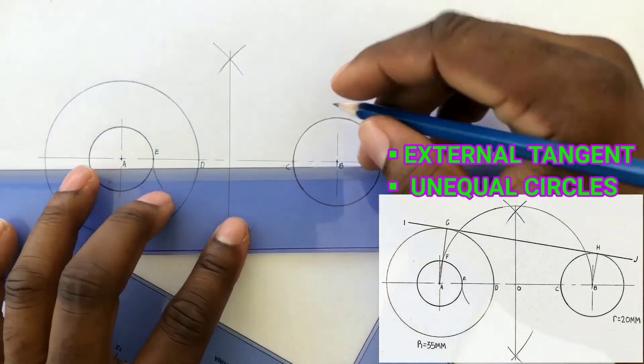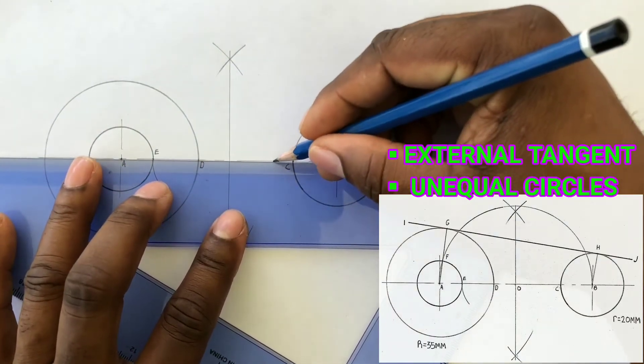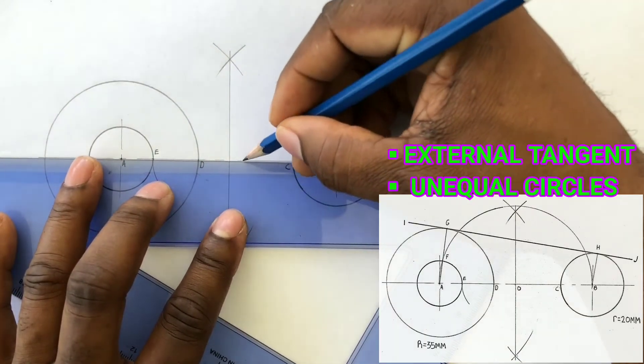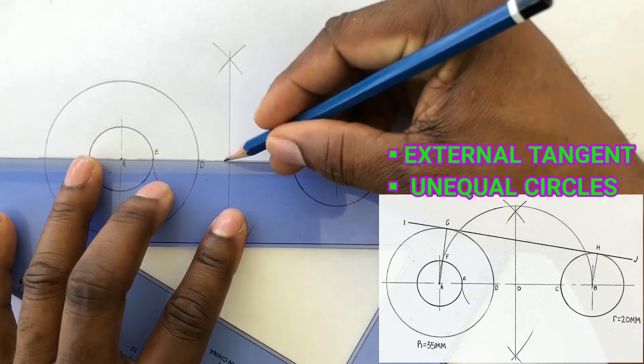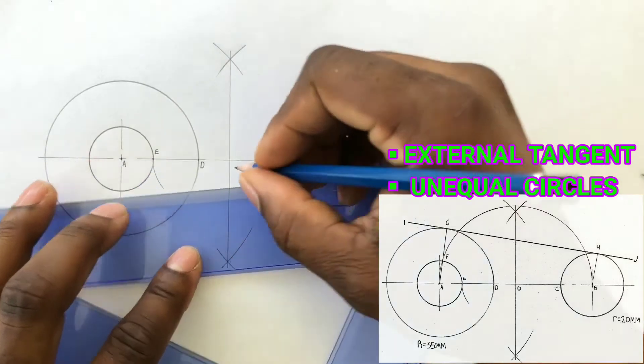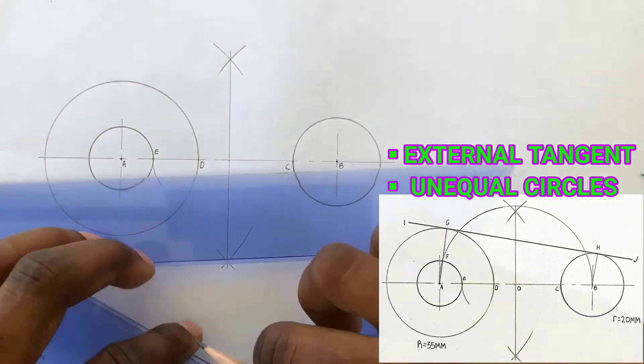Modify your center line so that the bisecting line will intersect with your center line if necessary. Label the intersection point O.